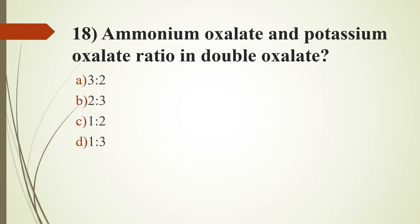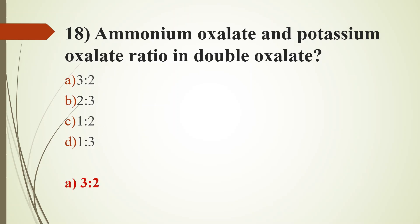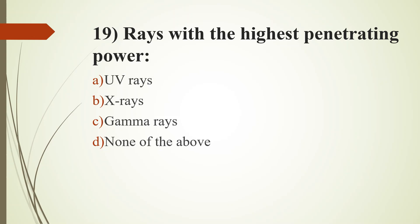17th question. The principle of buoyancy was given by: option A, Archimedes; option B, Newton; option C, Galileo; option D, Louis Pasteur. Answer is option A, Archimedes. 18th question. Ammonium oxalate and potassium oxalate ratio in double oxalate: option A, 3 is to 2; option B, 2 is to 3; option C, 1 is to 2; option D, 1 is to 3. Answer is option A, 3 is to 2. 19th question. Rays with the highest penetrating power: option A, UV rays; option B, X rays; option C, gamma rays; option D, none of the above. Answer is option C, gamma rays.